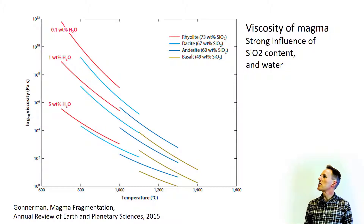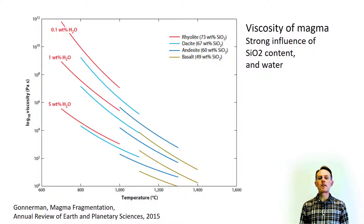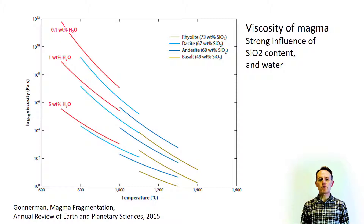This figure from Gonnerman shows viscosity as a function of temperature for natural silicate melts of four compositions: basalt, andesite, dacite, and rhyolite. For each magma type, there are three curves corresponding to different amounts of water in the magma: 0.1%, 1%, and 5%. Amounts of water dissolved in magma typically lie somewhere in these ranges. Viscosity decreases with temperature and dissolved water content, but it increases with silica content.